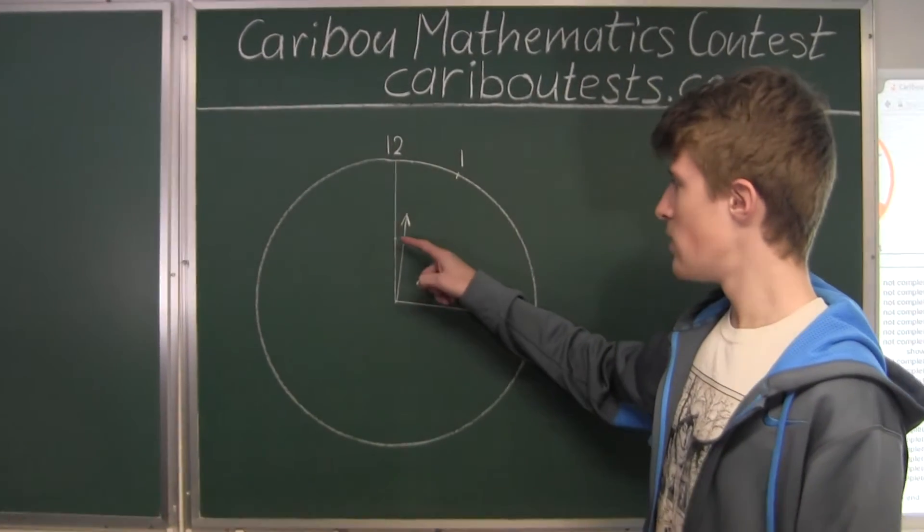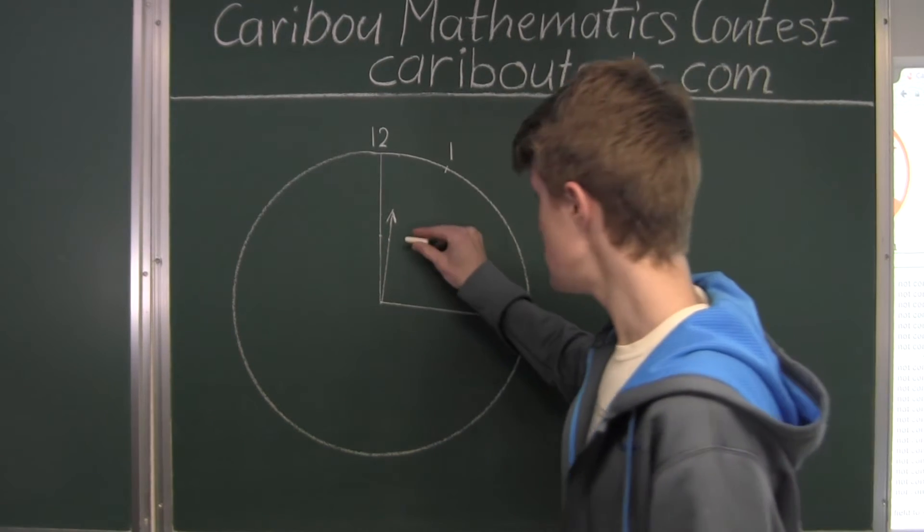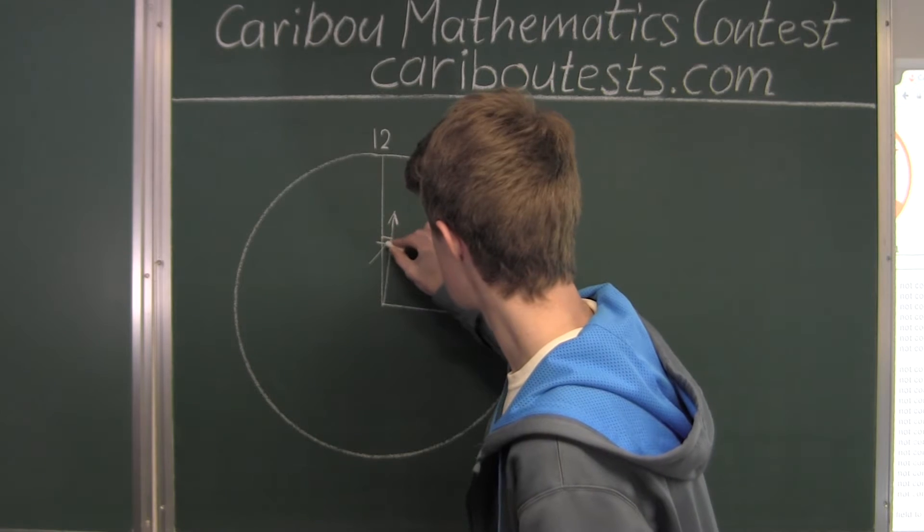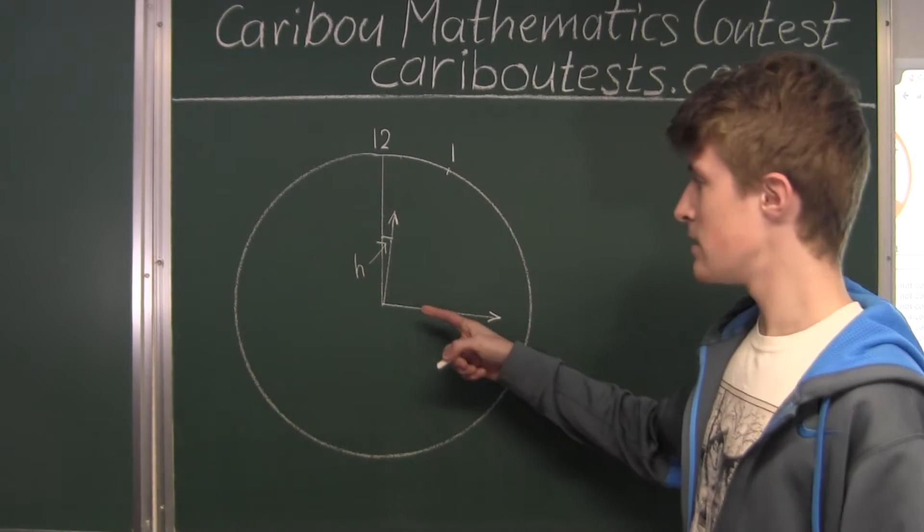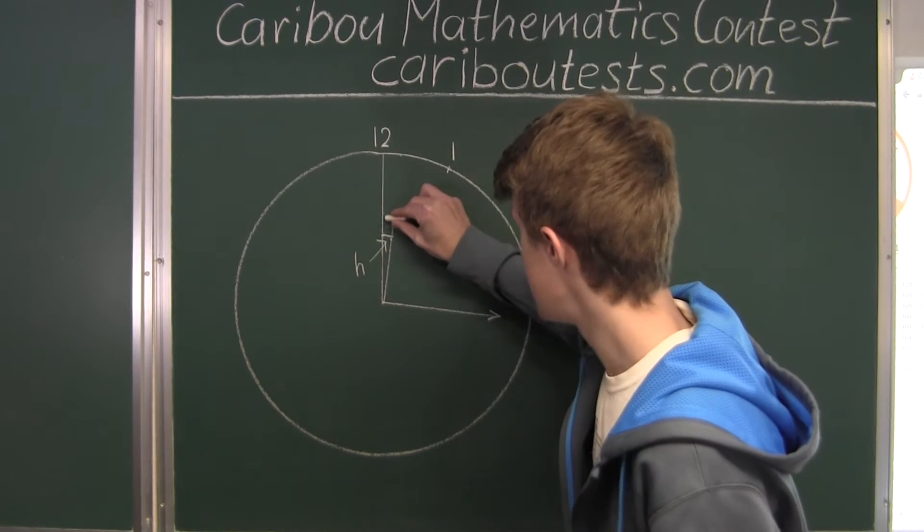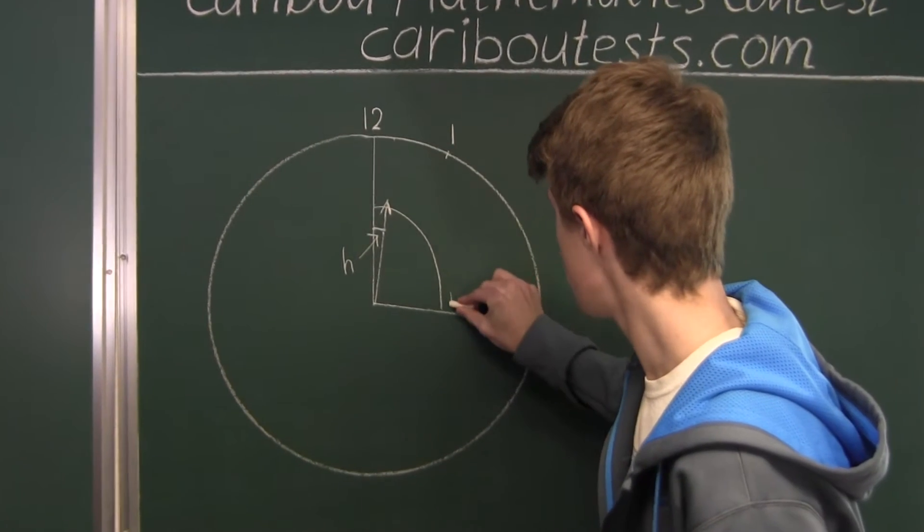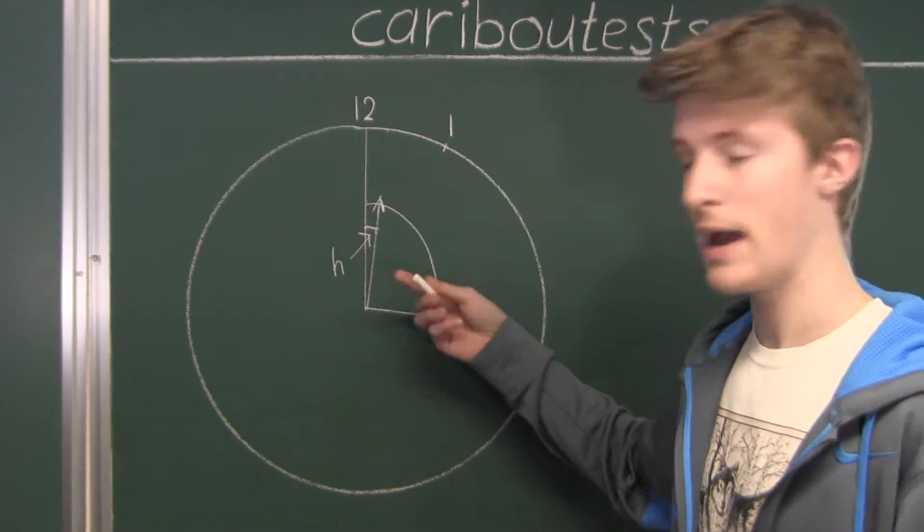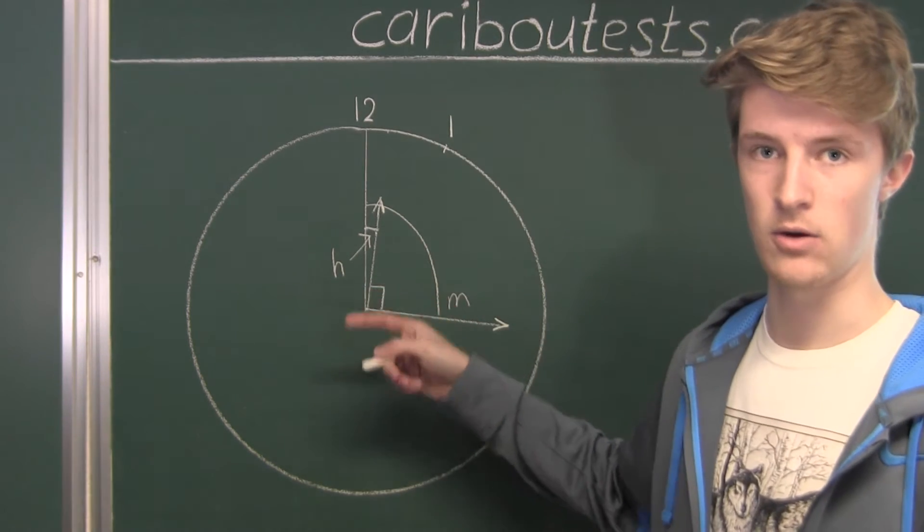Okay, so the angle that the hour hand has to move, we will call H. And the angle that the minute hand has to move, we will call M, such that these two hands form a right angle.